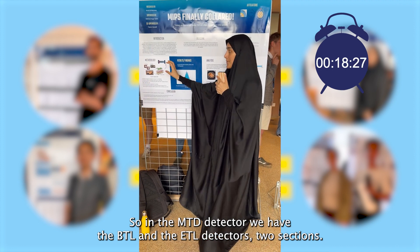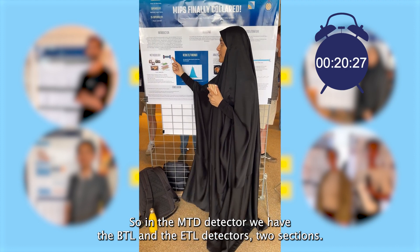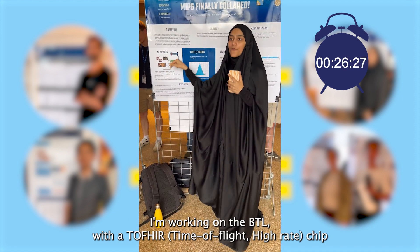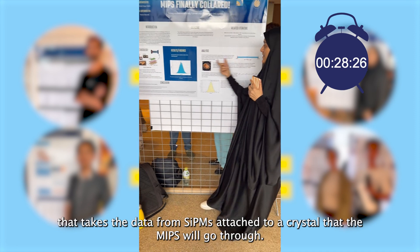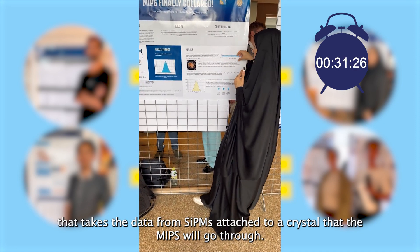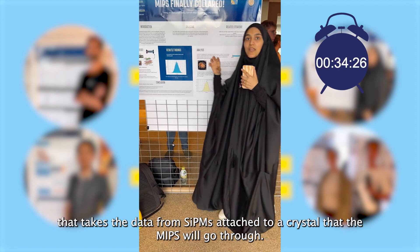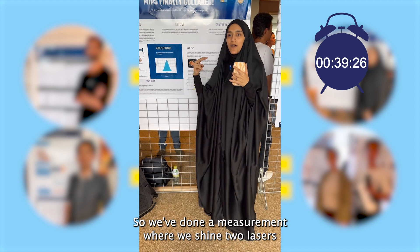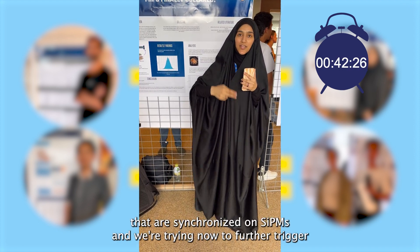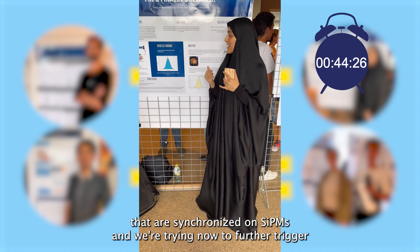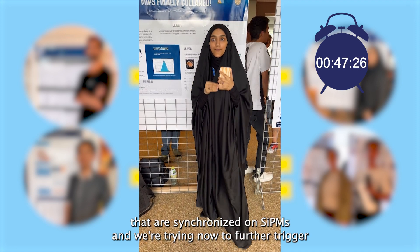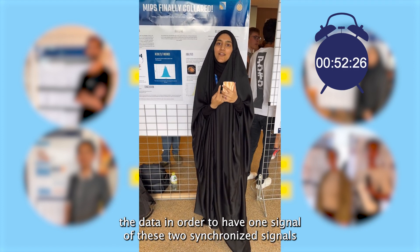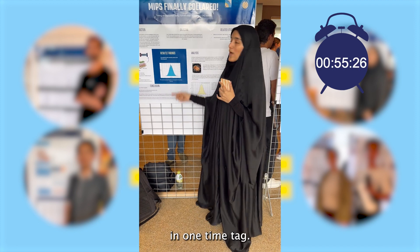In the MTD detector, we have the BTL and the ETL detectors — two sections. I'm working on the BTL with a TOFHIR chip that takes the data from SiPMs attached to a crystal that the MEPs will go through. We've done a measurement where we shine two synchronized lasers on SiPMs, and we're now trying to further process the data in order to have one combined signal of these two synchronized signals in one time plot.